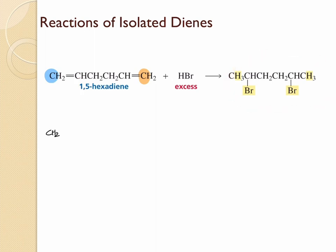Let's also take a look at the mechanism. First one double bond is going to react with the electrophilic agent and complete the addition, and then the second double bond will react. This is going to follow the standard mechanism for electrophilic addition that occurs in alkenes.